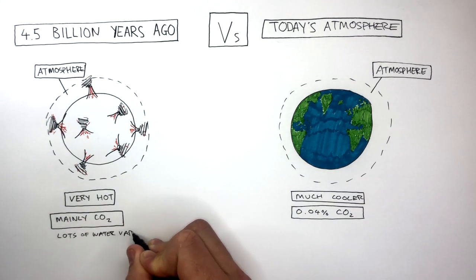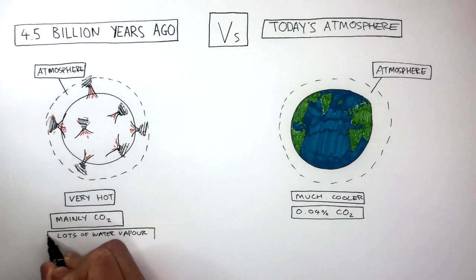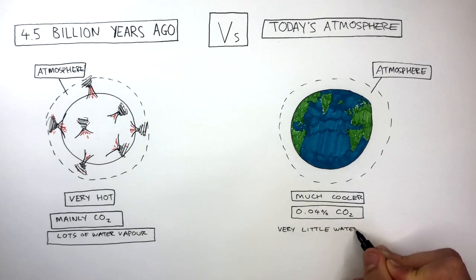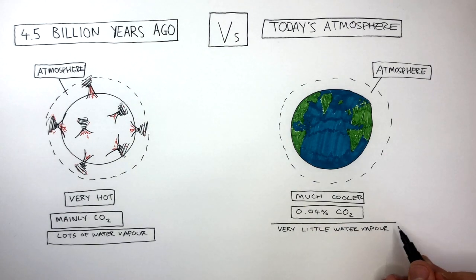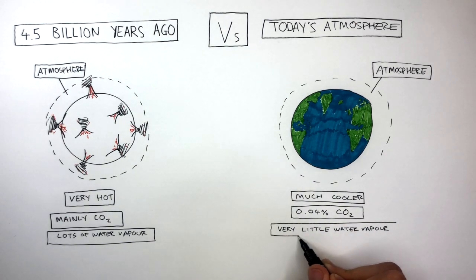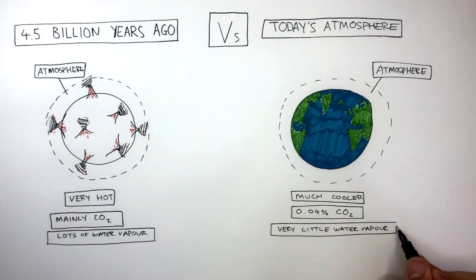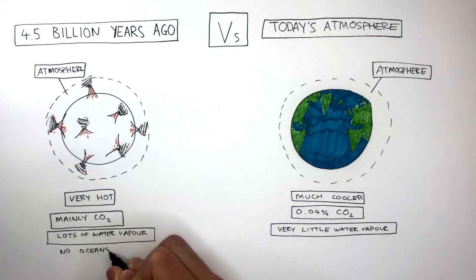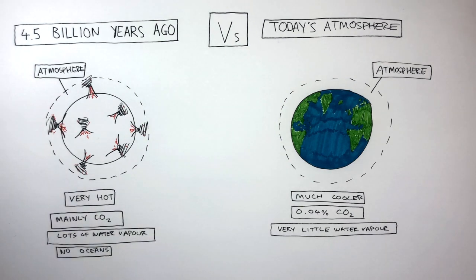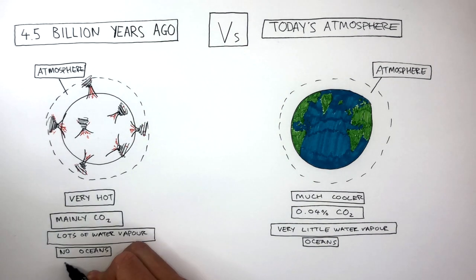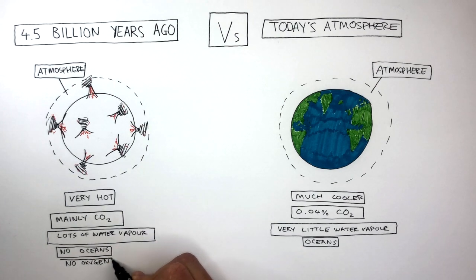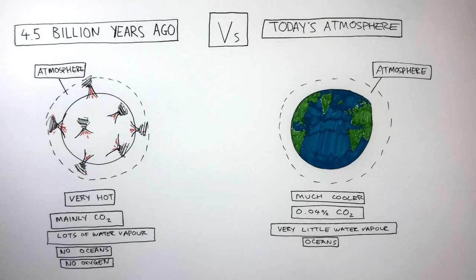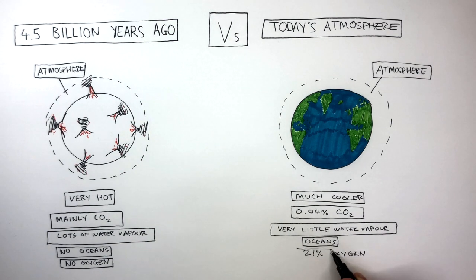There was lots of water vapour in Earth's early atmosphere, and there is very little water vapour in today's atmosphere compared to what it was like 4.5 billion years ago. There were no oceans 4.5 billion years ago, whereas in today's Earth we know there are a lot of oceans. There was no oxygen in Earth's atmosphere 4.5 billion years ago, but in today's atmosphere it is made up of 21% oxygen — a very big difference.